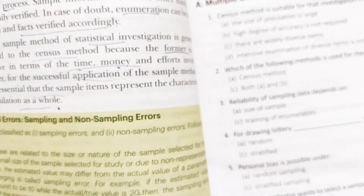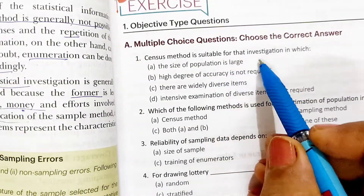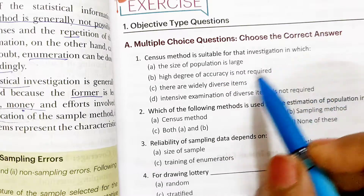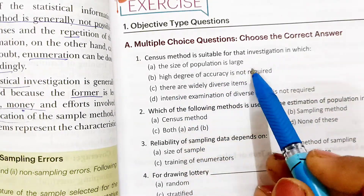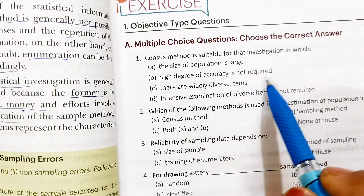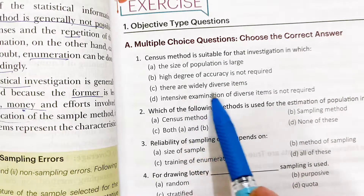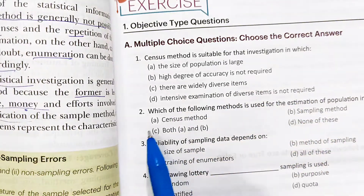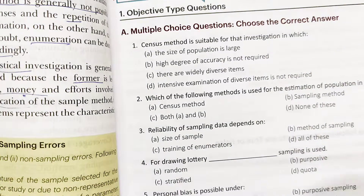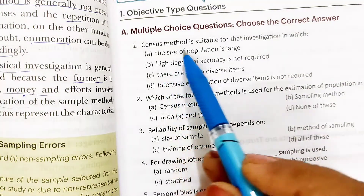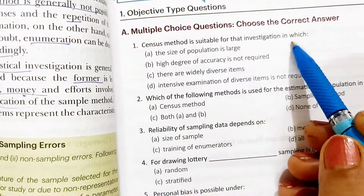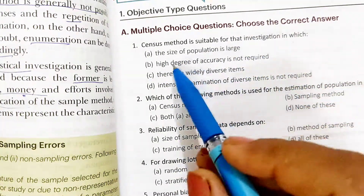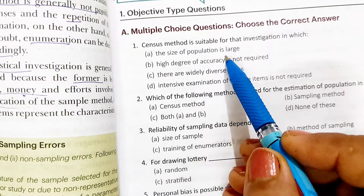Now you can read all these MCQs. The first question: the census method is suitable for investigation in which the size of population is large, a high degree of accuracy is required, and there is a wide variety of diverse items. Similarly, all these conditions apply — census method is suitable when the population is large and has variety of items, which makes it the accurate answer.